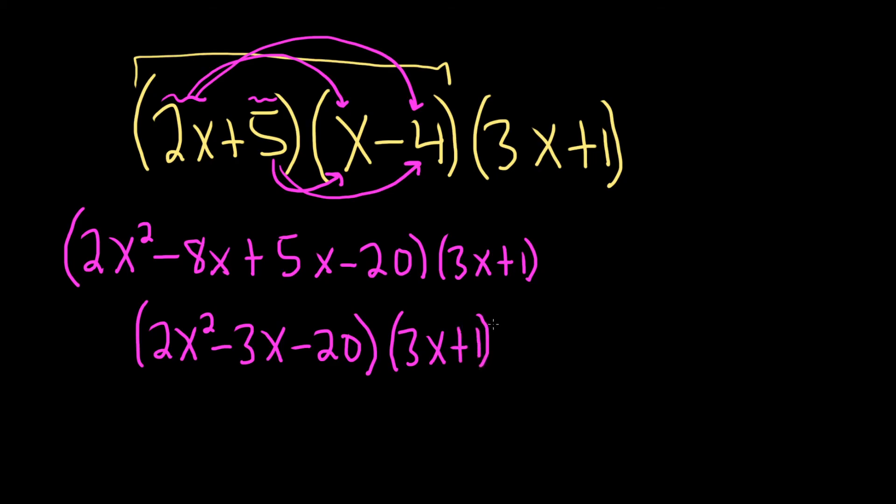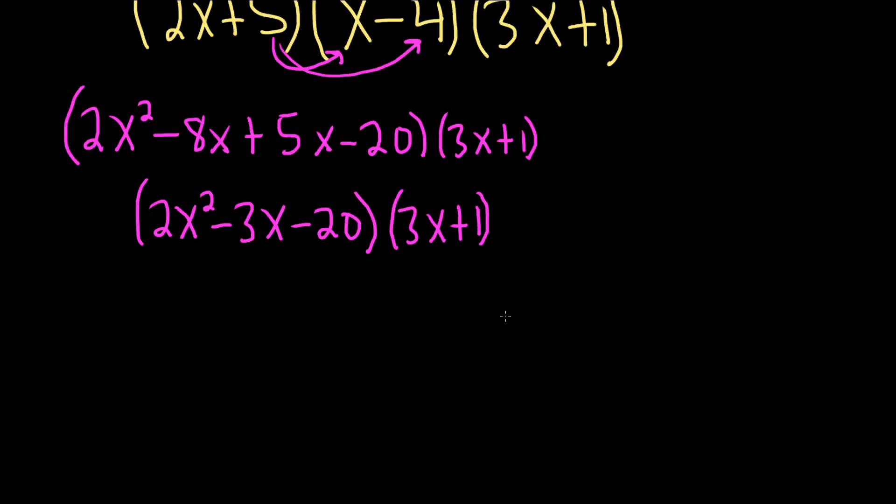Okay, now we're going to do it again. So we're just going to take each of these and distribute it through into this piece here. I'm going to use a different color. So first let's do 2x squared. So 2x squared times 3x is going to give us 6x cubed, right? Because x squared times x is x cubed. You add the exponents. Then 2x squared times 1 will give us plus 2x squared.